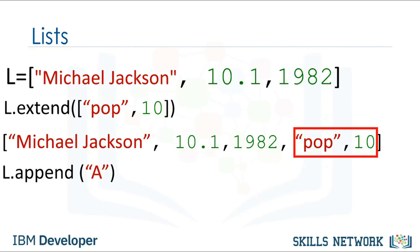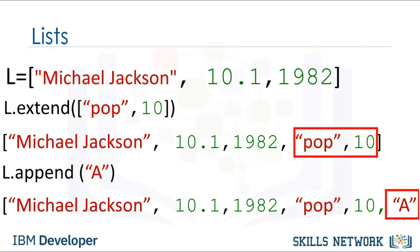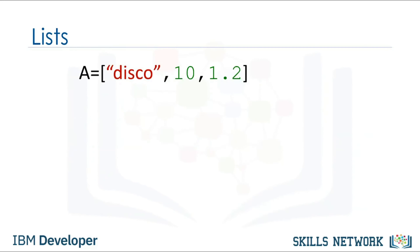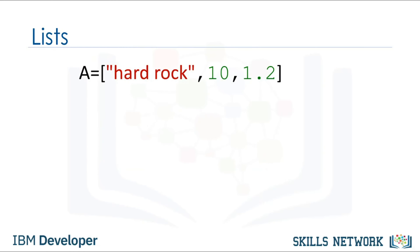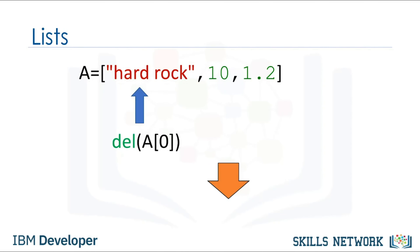If we append the string A, we further change the list, adding the string A. As lists are mutable, we can change them. For example, we can change the first element — the list now becomes hardrock, 10, 1.2. We can delete an element of a list using the del command. We simply indicate the list item we would like to remove as an argument. For example, if we remove the first element, the result becomes 10, 1.2.